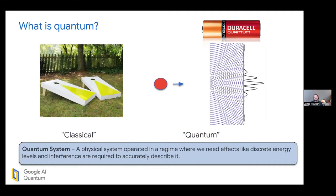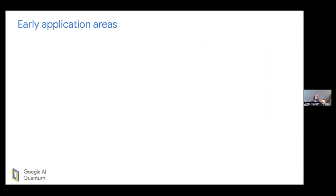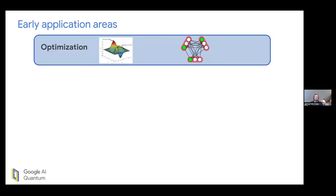A quantum system, as contrasted with a classical one, is a physical system operated in a regime where we actually need effects like discrete energy levels and interference to accurately describe it. We're going to use those effects to write down algorithms or operations that would be very hard to do without them — that's what we're hoping to do when we build a quantum computer: harness those extra physical effects for some kind of advantage on a task we care about. Application areas include optimization and annealing-type situations.